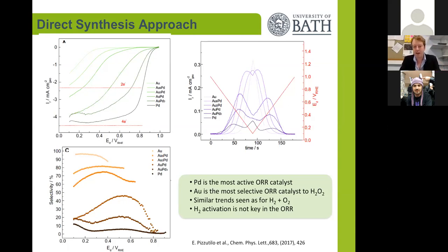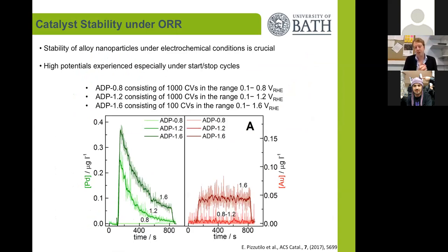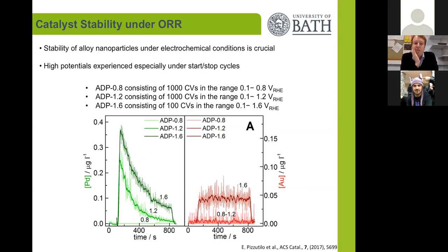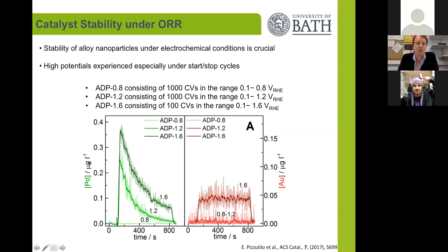This is all background to learn how these alloys behave in electrochemical situations. When using bimetallic particles in these electrochemical situations, the stability of these alloys becomes very important, as each of the different metals has different oxidation potentials and will leach at different amounts. This is important because these high potentials will be experienced during start-stop cycles of any practical application. So we developed a few accelerated degradation protocols (ADPs) to see how these particles would behave under much harsher conditions.